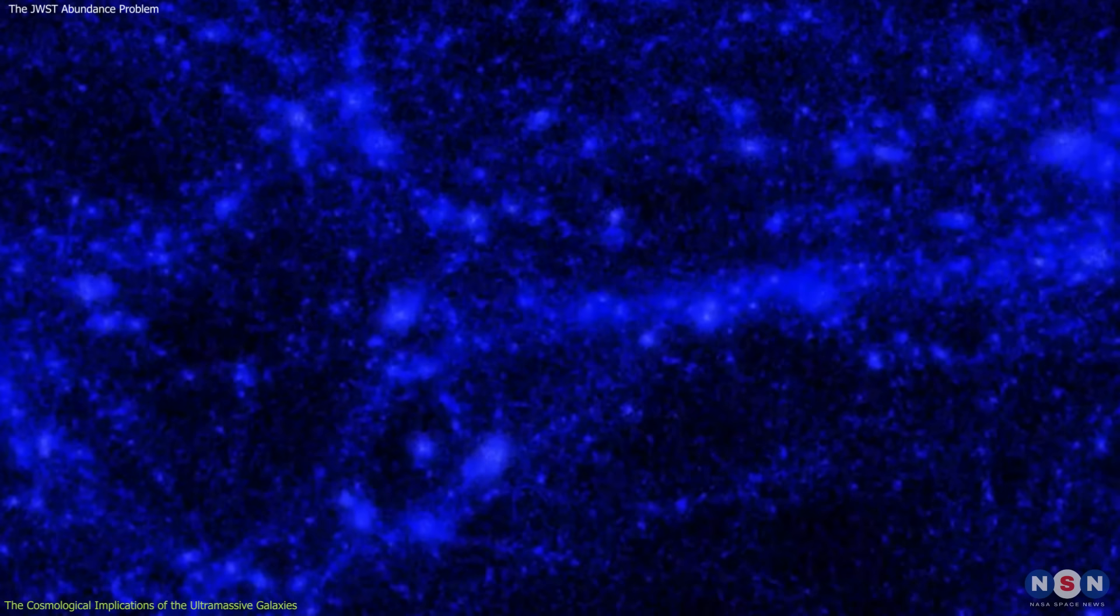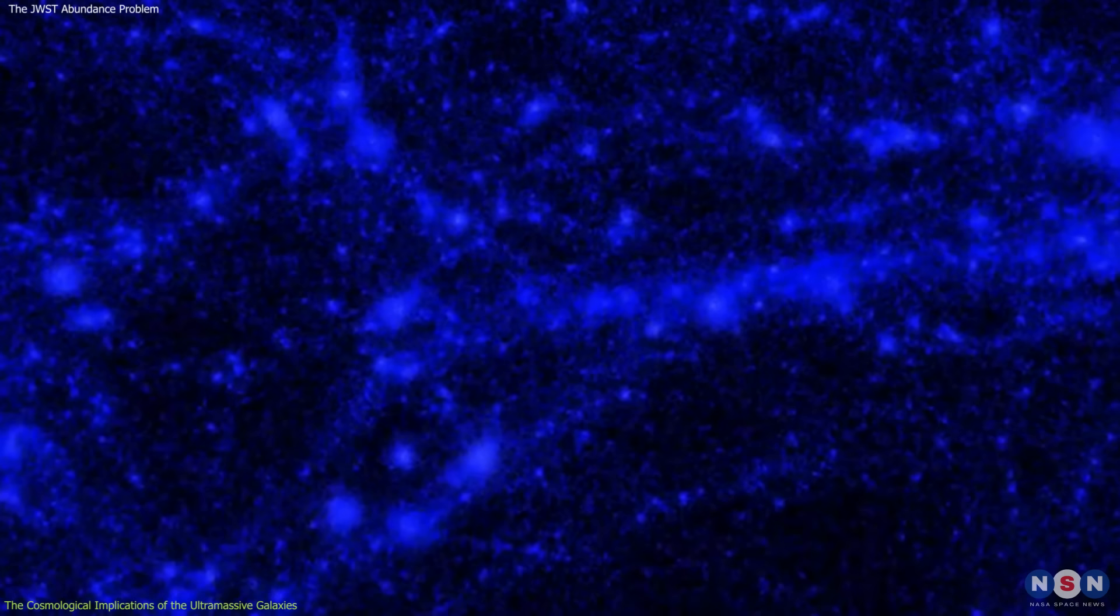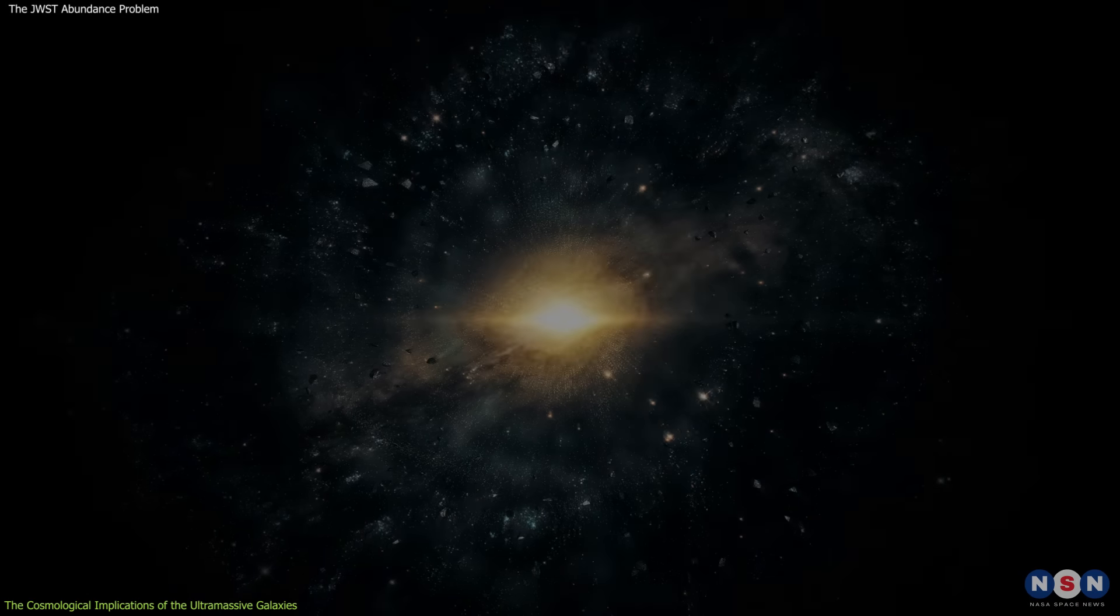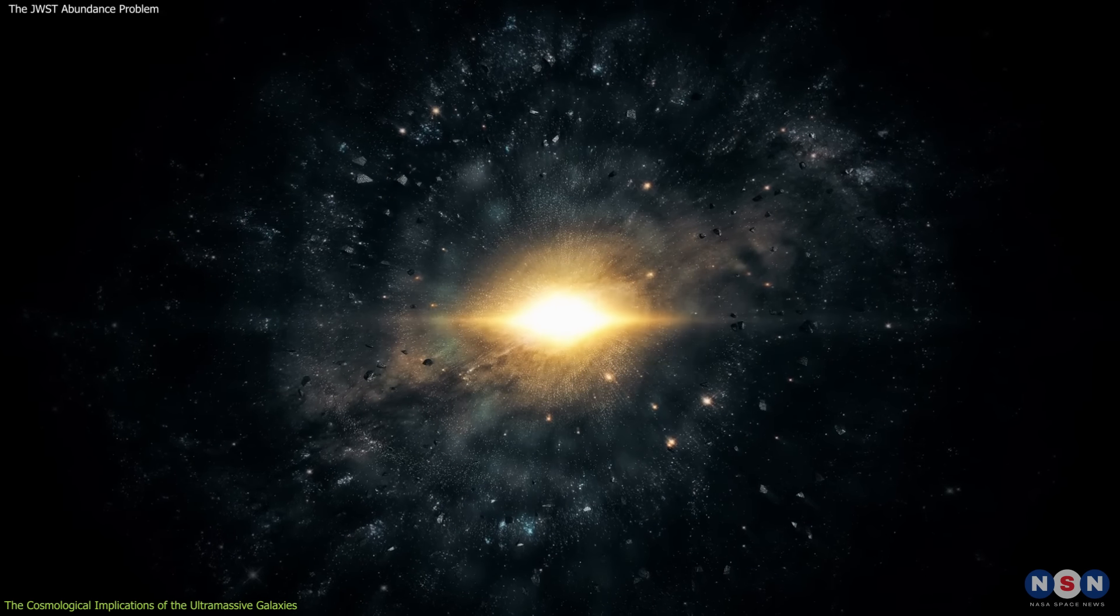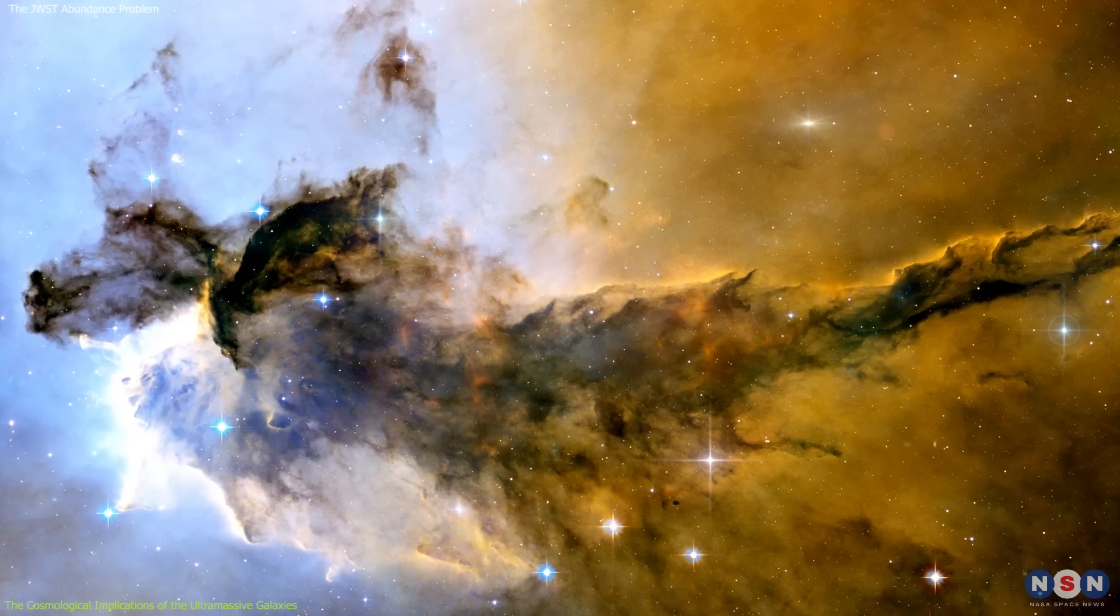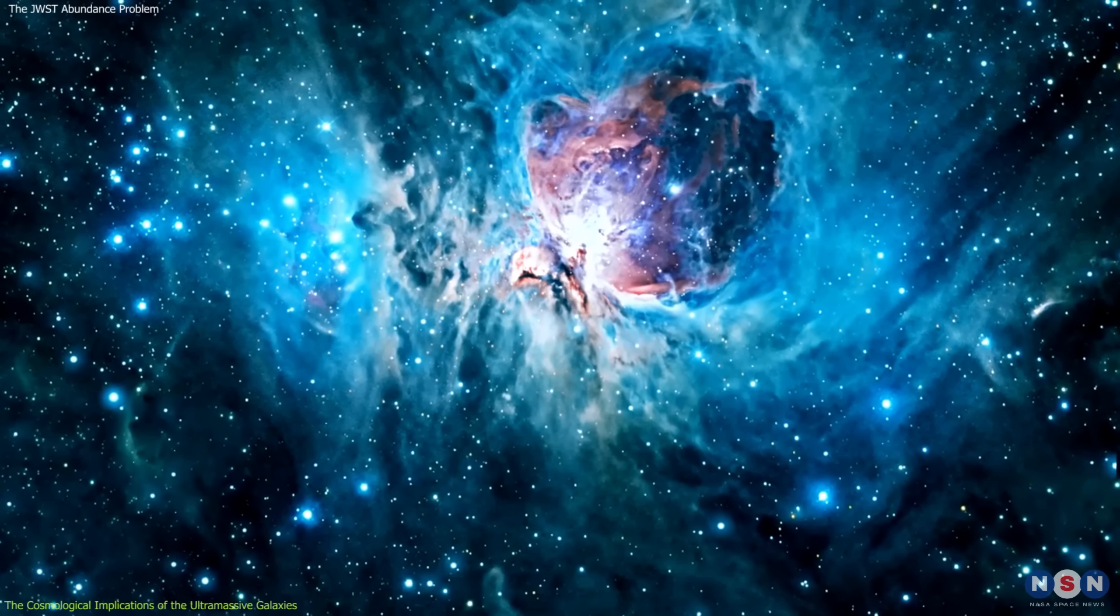For example, some researchers have suggested that dark matter could be more complex than we thought, and that it could have some interactions other than gravity, such as self-interactions or interactions with radiation. This could affect the formation and evolution of structures in the universe, and make them more efficient and faster.